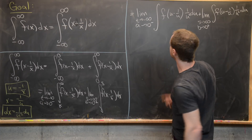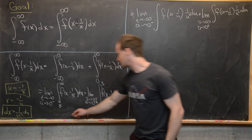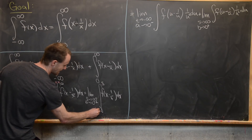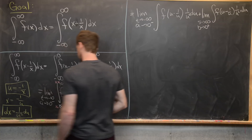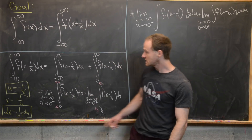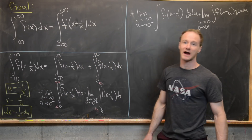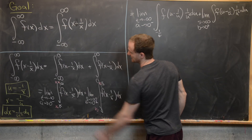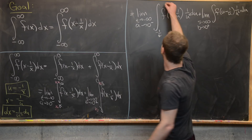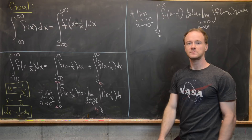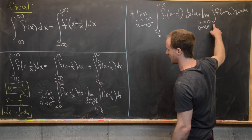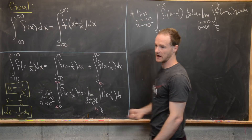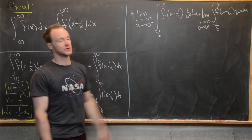Now we want to see what happens to the bounds of integration. These are x-bounds: x is running between t and a in the first integral, and between b and s in the second. If x = t, then u = -1/t. If x = a, then u = -1/a. Similarly over in the second integral, we have -1/b for the lower bound and -1/s for the upper bound.